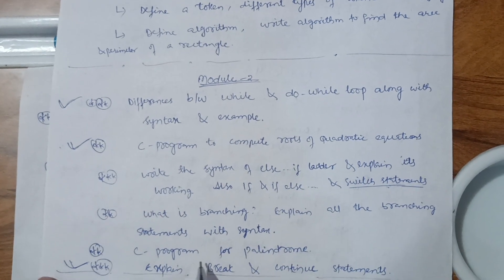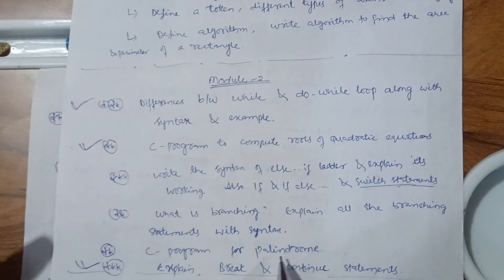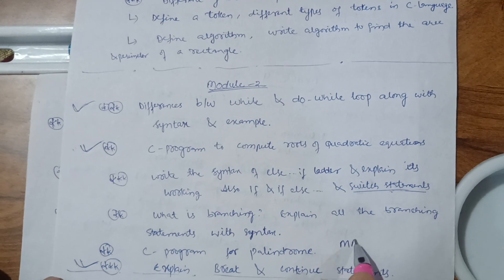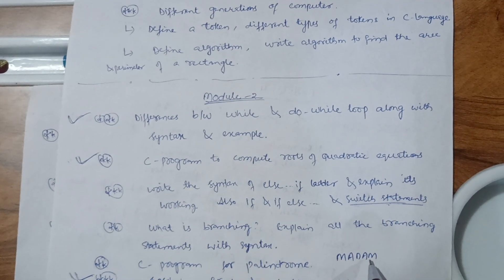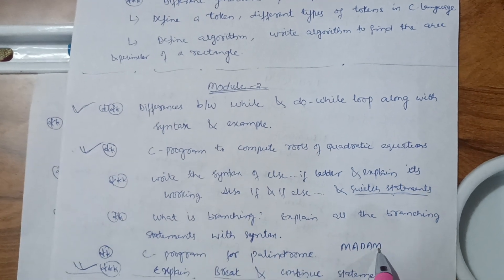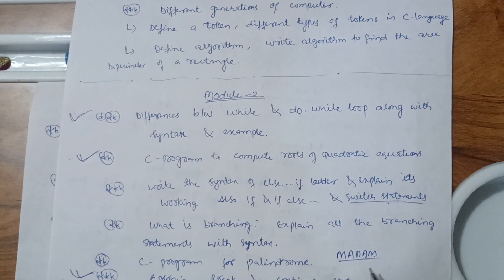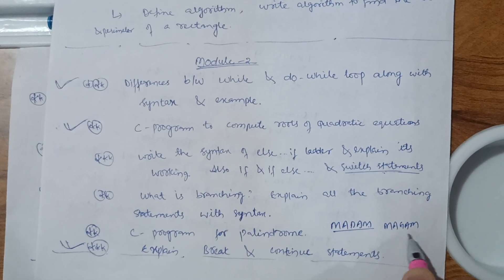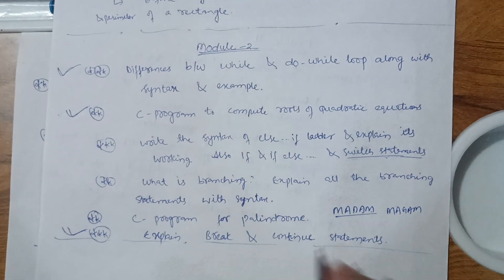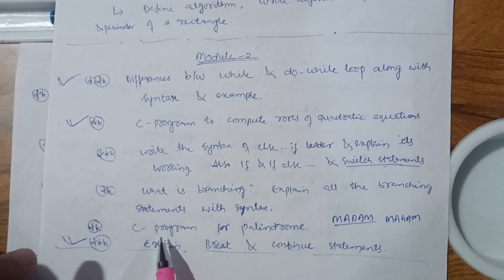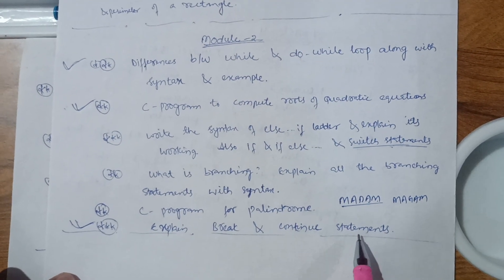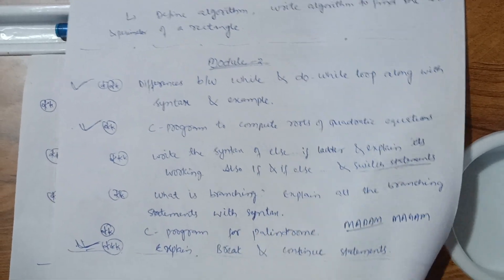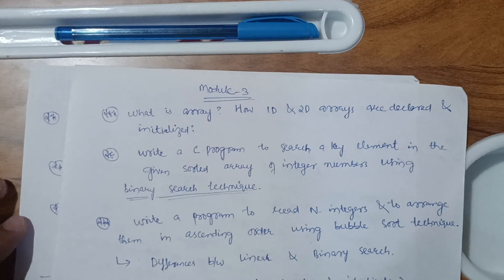Also focus on: what is branching and explain all branching statements with syntax; and write a C program for palindrome. For example, 'MADAM' reads the same in reverse — that is a palindrome. Another example is 'MAGAM', which reversed is still 'MAGAM'. Also focus on break and continue statements. This is enough for Module 2.